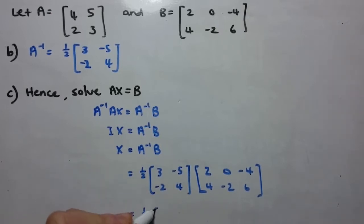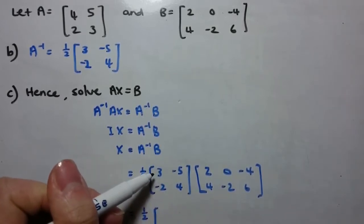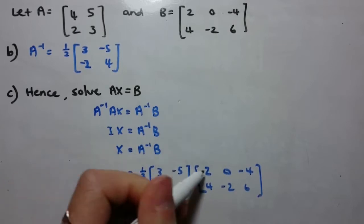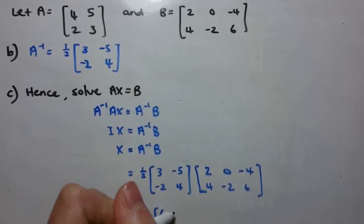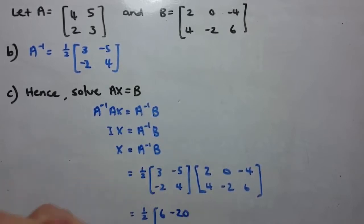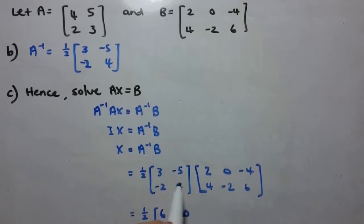So again I'm just going to leave that half out the front, and just start to multiply. So again that first element is first row first column, so first row times first column, 3 times 2 is 6, minus 20.